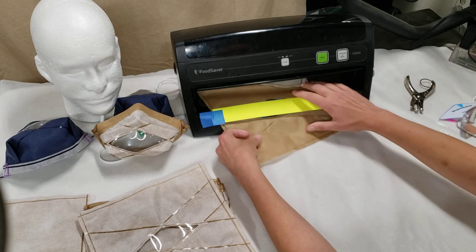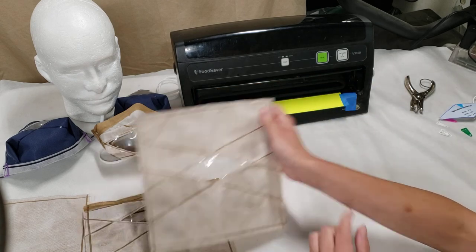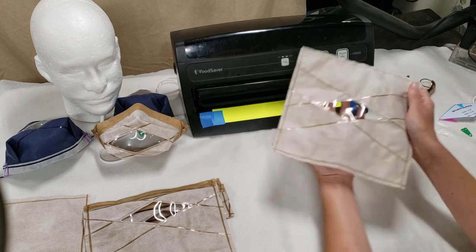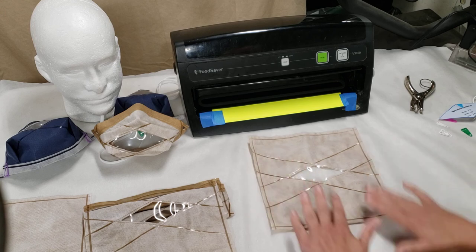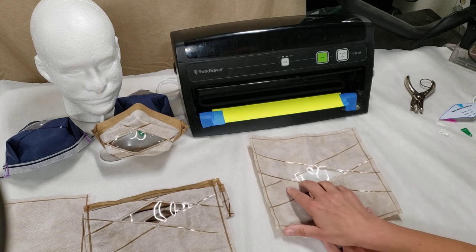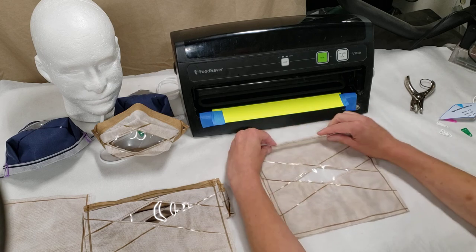Once you're done pull it up and out and you trim any excess plastic along the edge at each step. So then you end up with your characteristic crisscross heat sealed window in place and now it's all down to the folds.